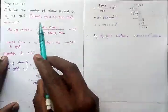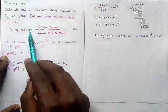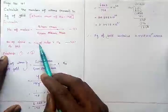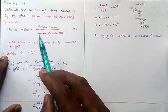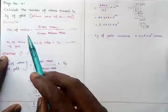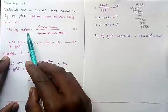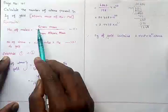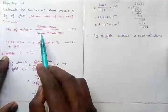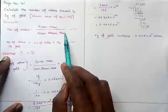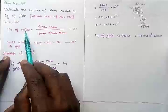When you calculate the number of atoms from any given data, first you convert the given data into number of moles — that is the best approach, because one mole of any substance contains 6.023 × 10²³. So the first step is to calculate the number of moles. The formula is: number of moles = given mass / gram atomic mass. This is Formula 1.